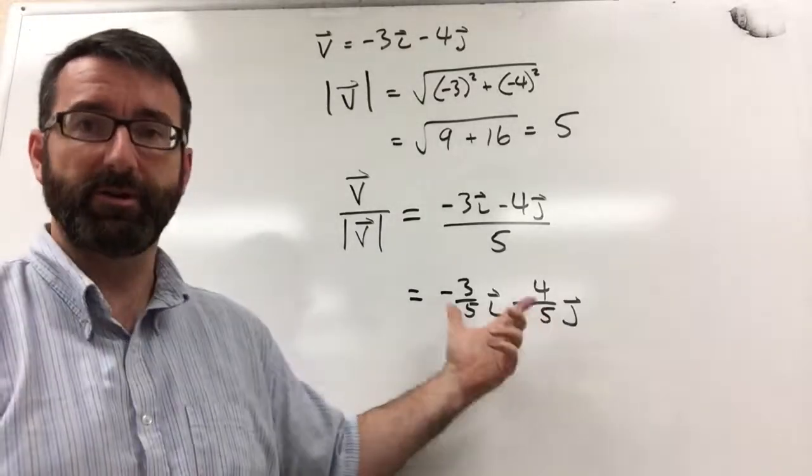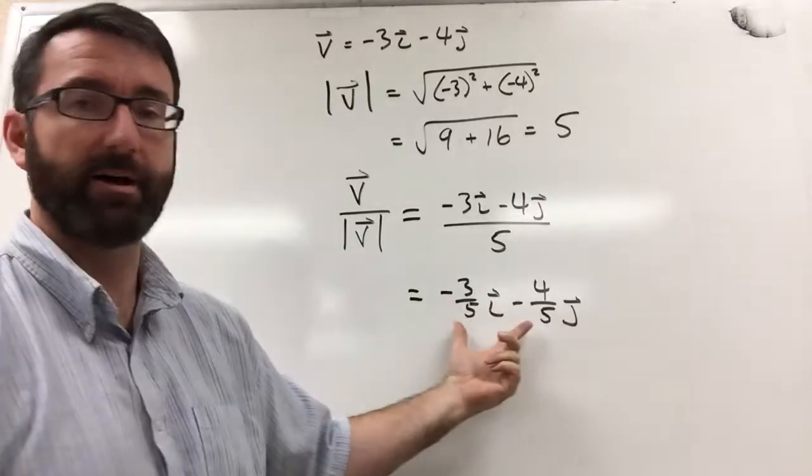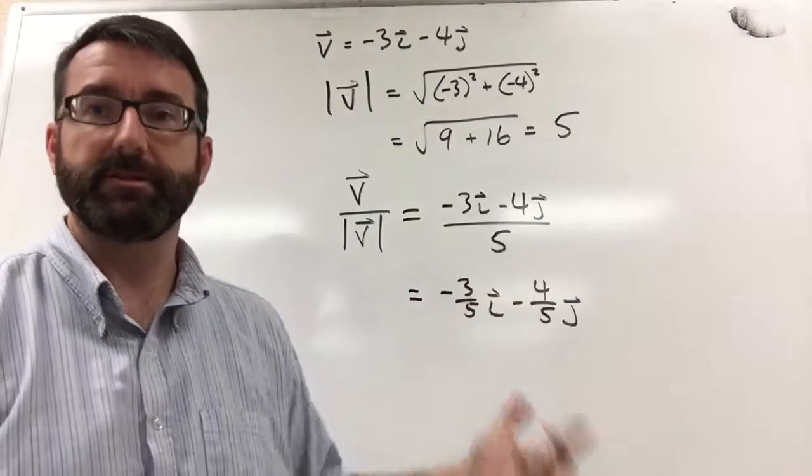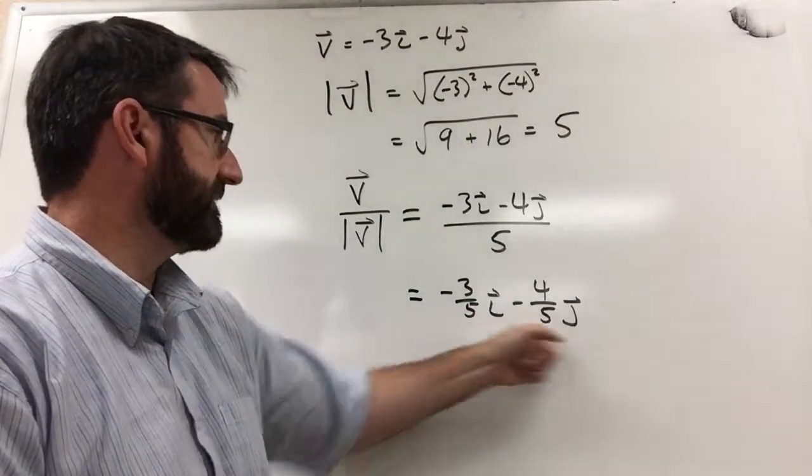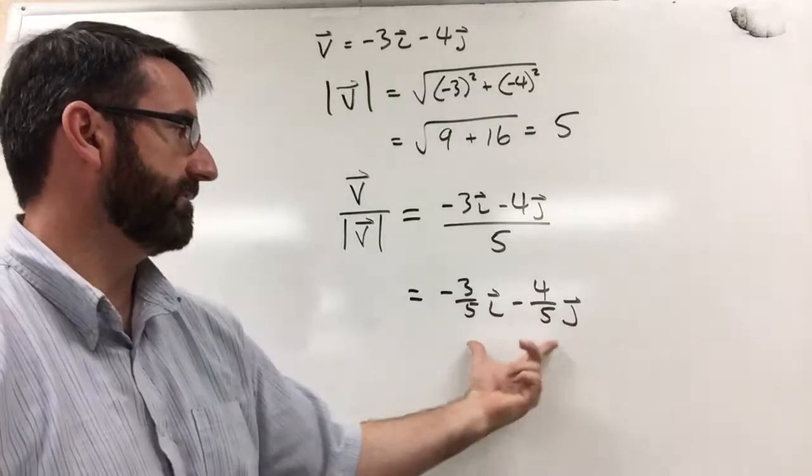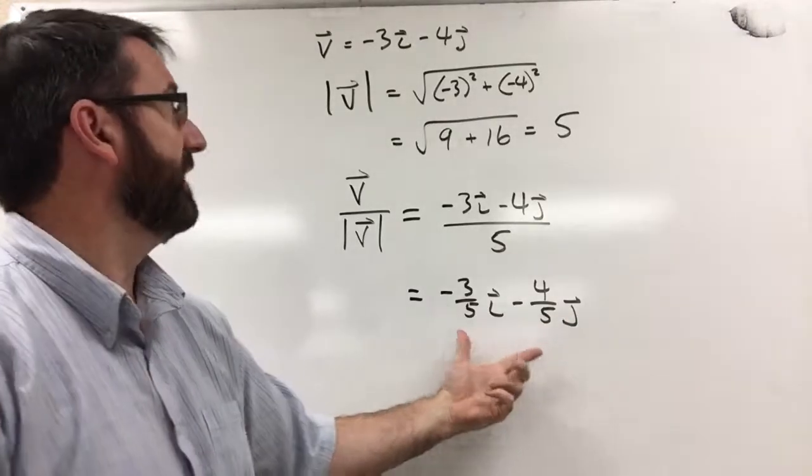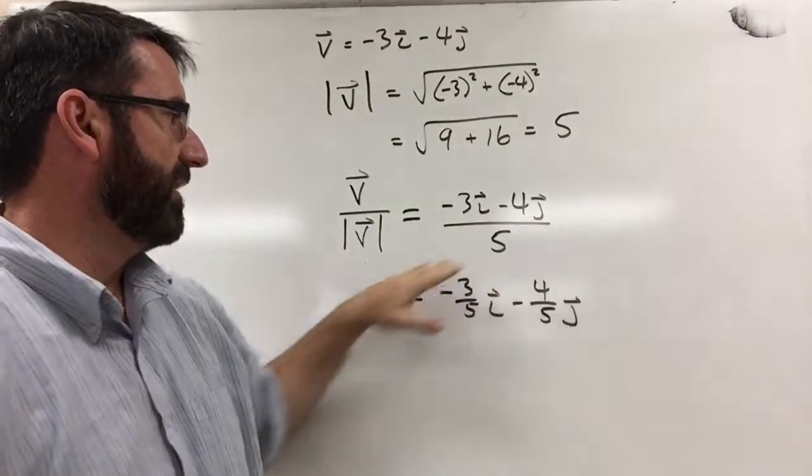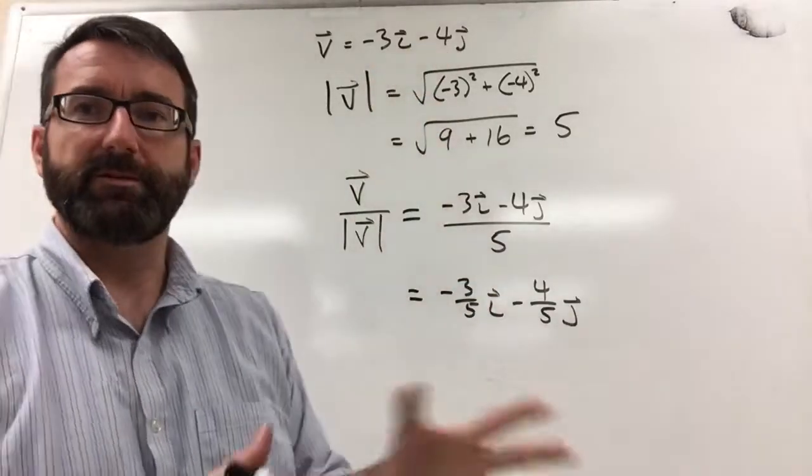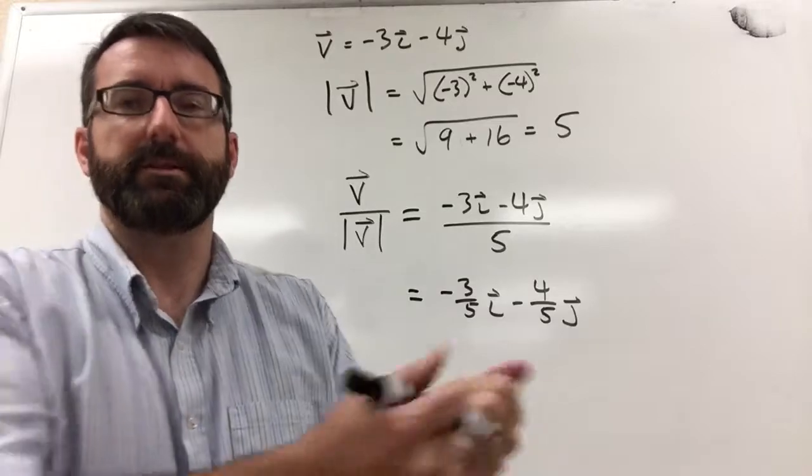And so this right here is a unit vector. If you went and figured out the length of this vector, it's going to be 1, and you can check that on your own if you like. But this is going to be a unit vector, a vector of length 1, but it's pointing in the same direction as our original vector. So we've reduced this vector down to just its direction.